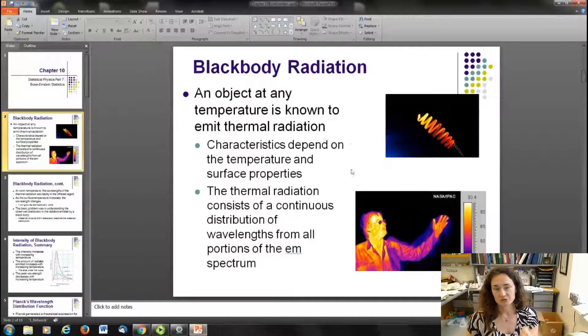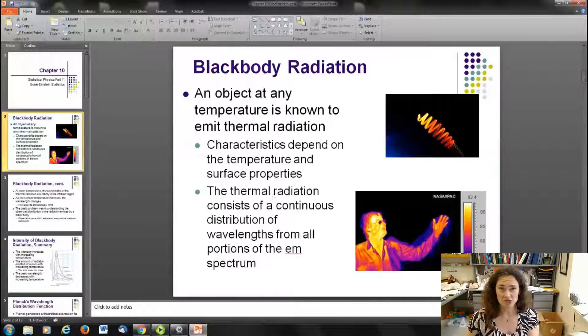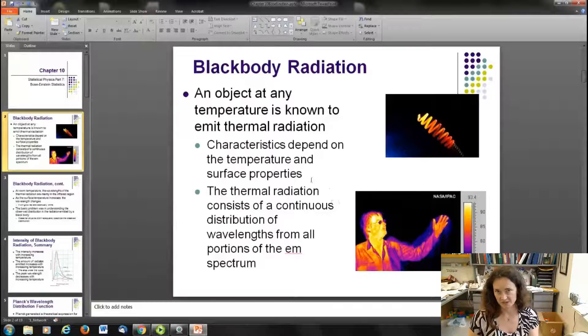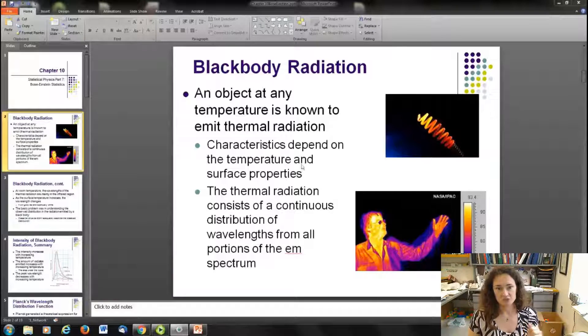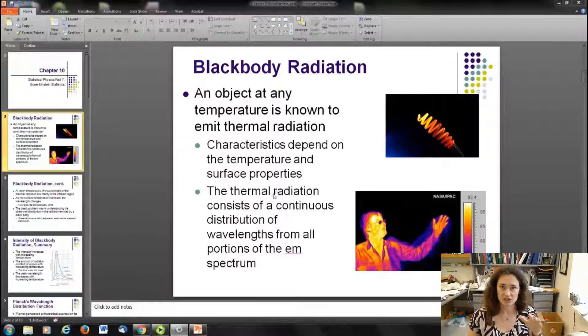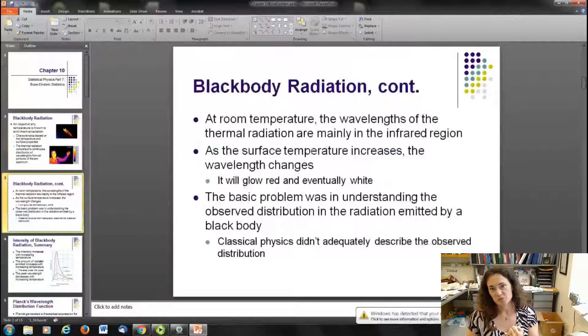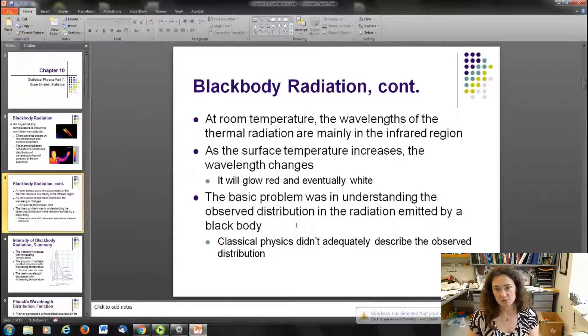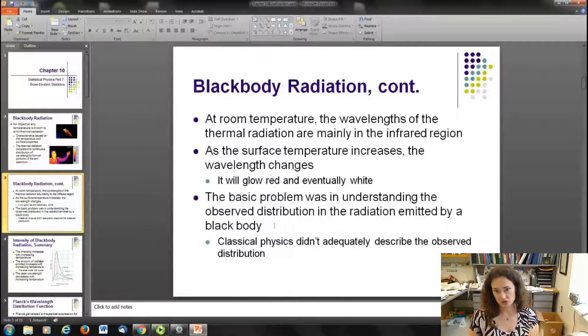To remind you from Modern Physics 1, black body radiation is the radiation that's emitted from an object purely because of its temperature and the surface properties like the emissivity. A black body will emit radiation in a continuous spectrum with a characteristic shape in the intensity curve. At room temperature, black body radiators emit in mostly the infrared region, and as surface temperature increases, the wavelength changes, going to shorter and shorter wavelengths.